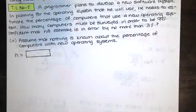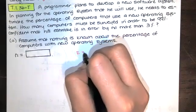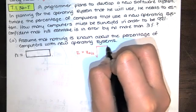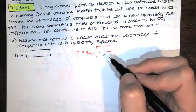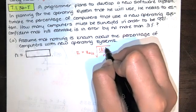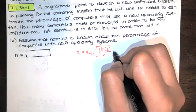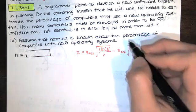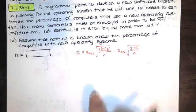This is really just a rearrangement of this formula. We had the error was equal to z sub alpha over 2 times the square root of p hat times q hat over n. In the absence of information, we would just assume that p hat equals 1 half and q hat equals 1 half. So the 1 half times the 1 half is that 0.25 that you saw in that formula there. So we've got 0.25 over n.